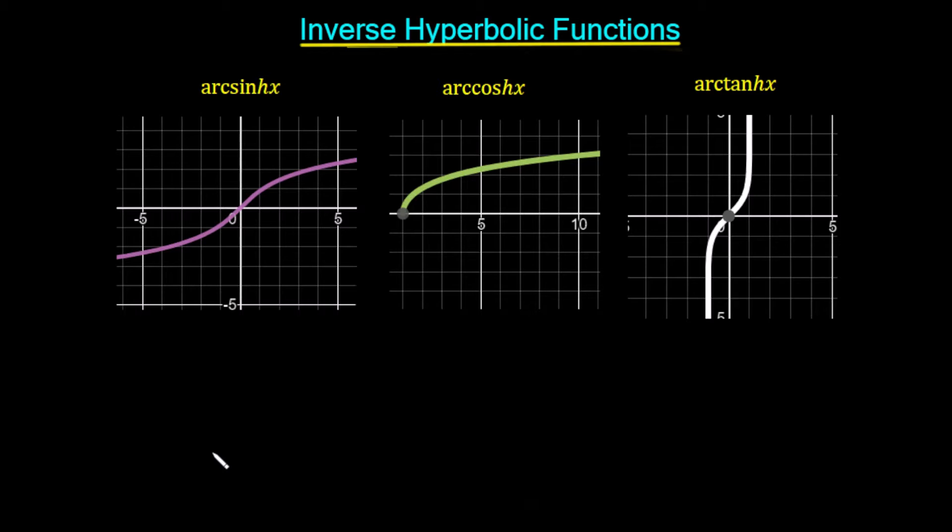Let's have a look at the other three hyperbolic functions which we want to approximate using our CORDIC algorithm. We have arc sinh x, arc cosh x, and arc tanh x. So these are our inverse functions. Let's have a look at them in the graphic calculator.